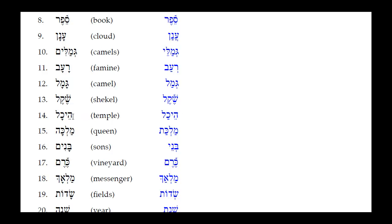Number thirteen: Hekal — the only reduction is the Kamets under the Khet, which reduces to a Patak. Result: Hekal.